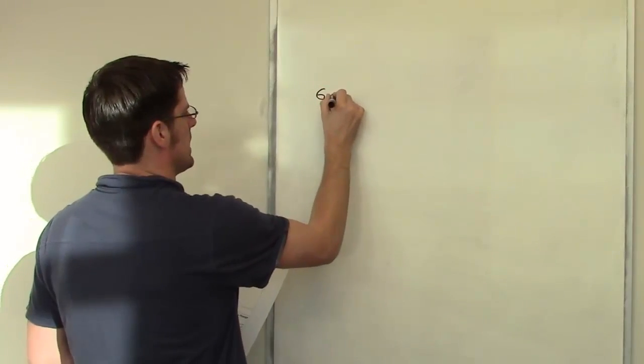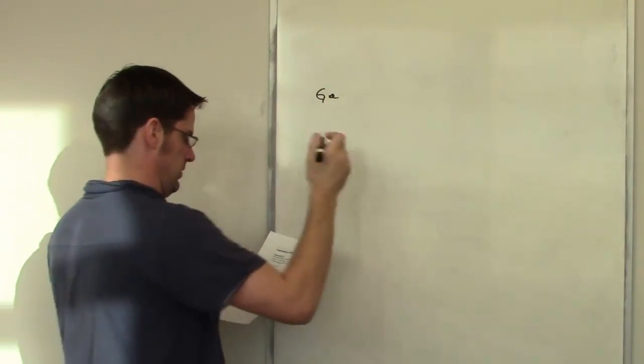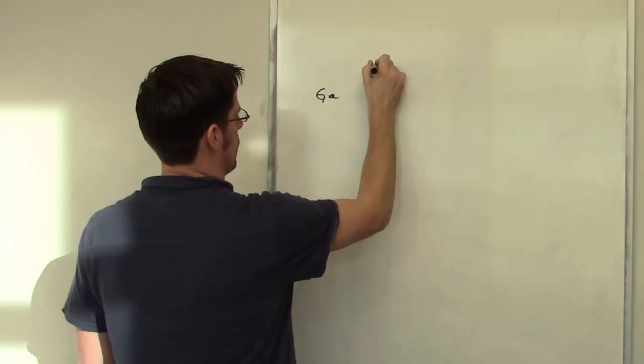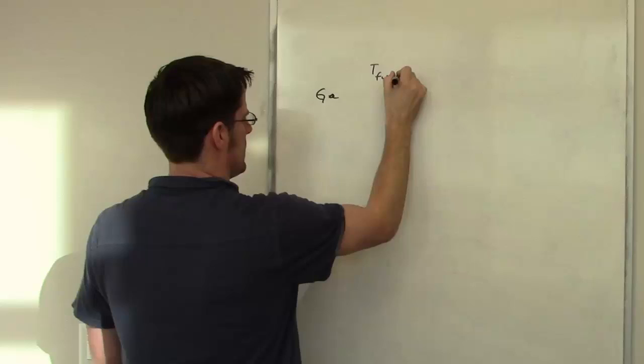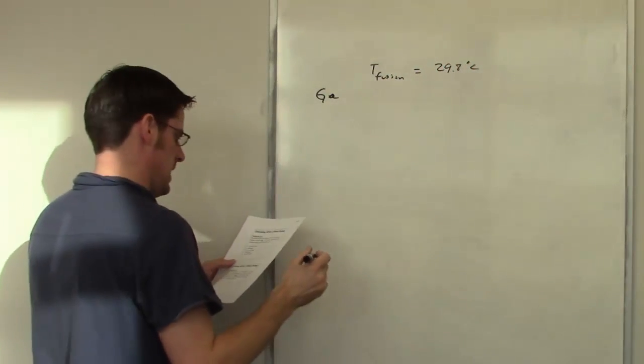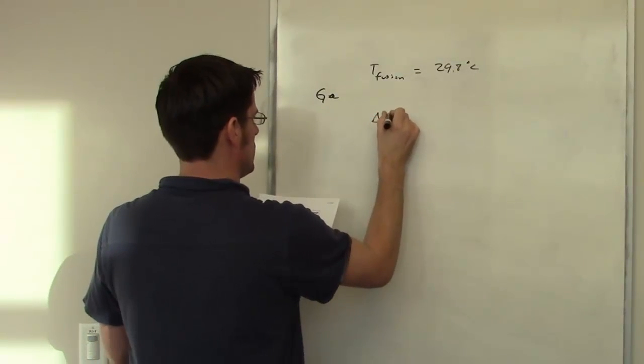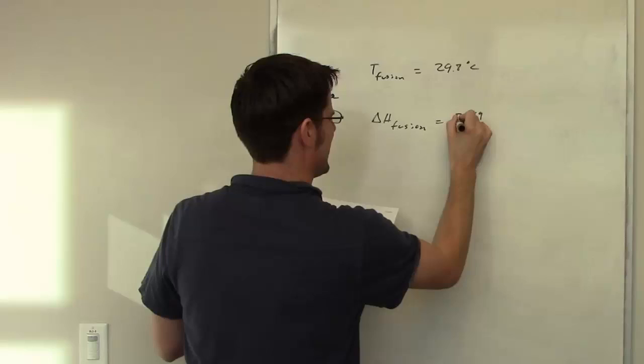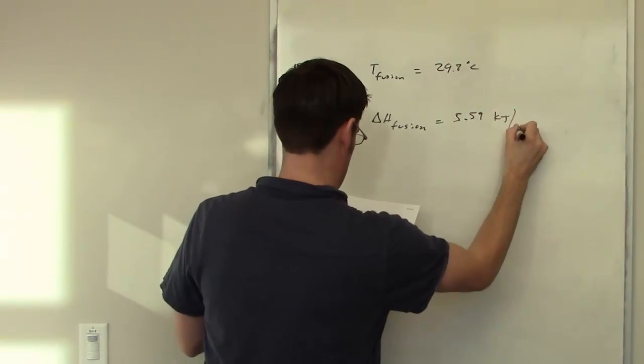This problem we have gallium that has a freezing point, or temperature of fusion, equal to 29.8 degrees Celsius, and it has a molar enthalpy of fusion, delta H fusion, of 5.59 kilojoules per mole.